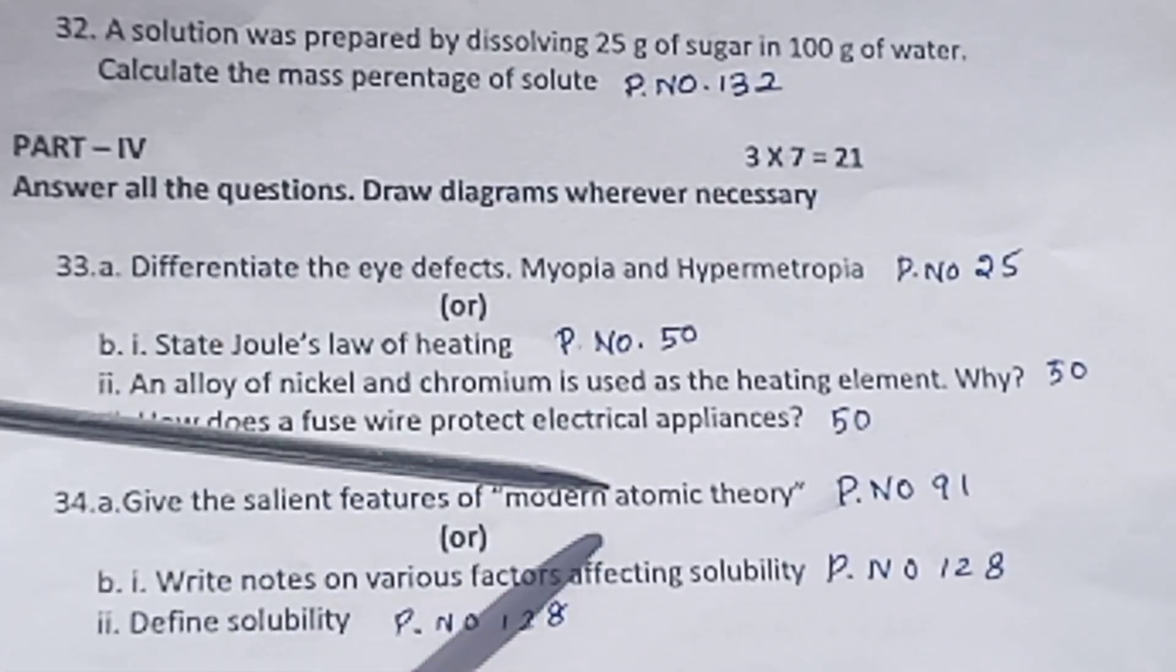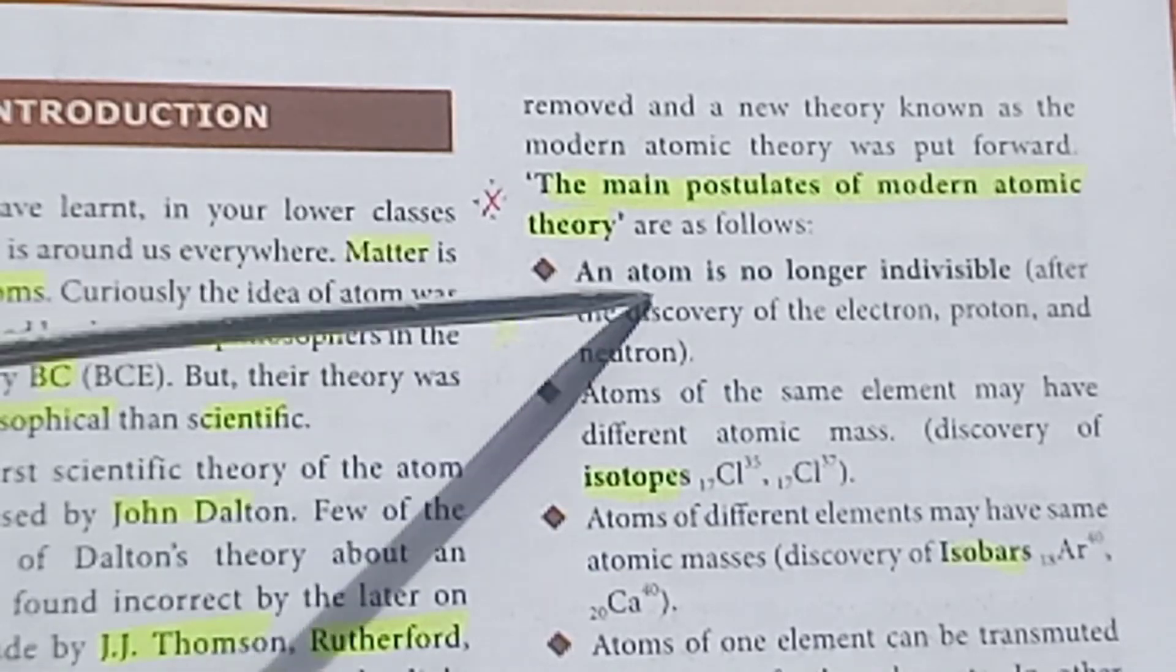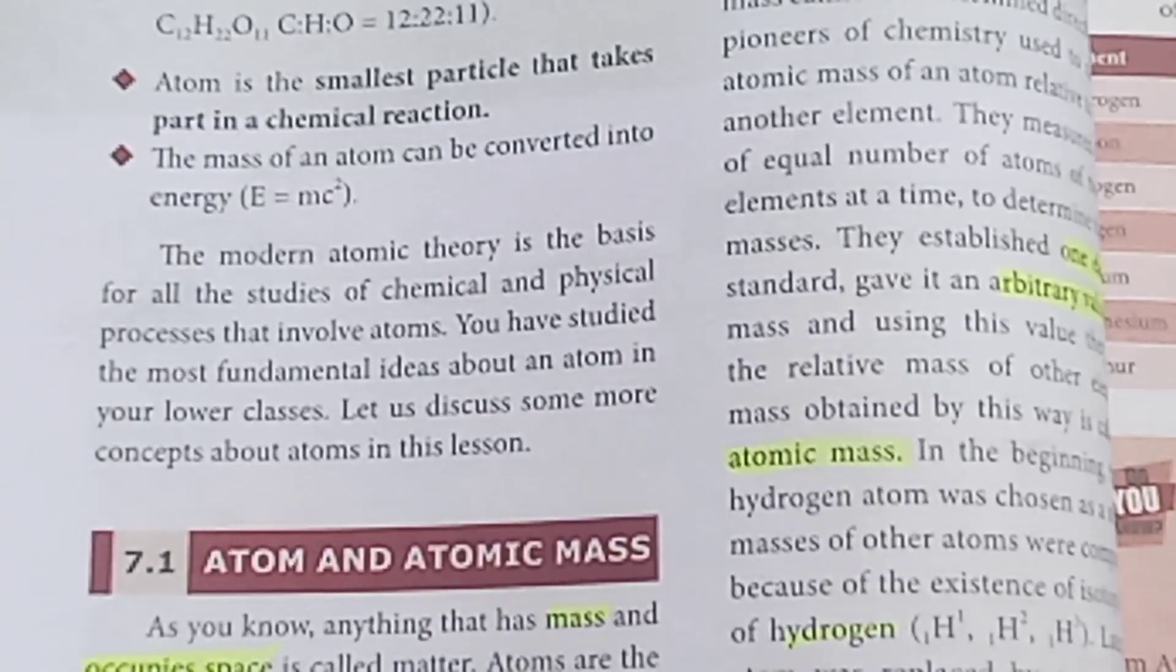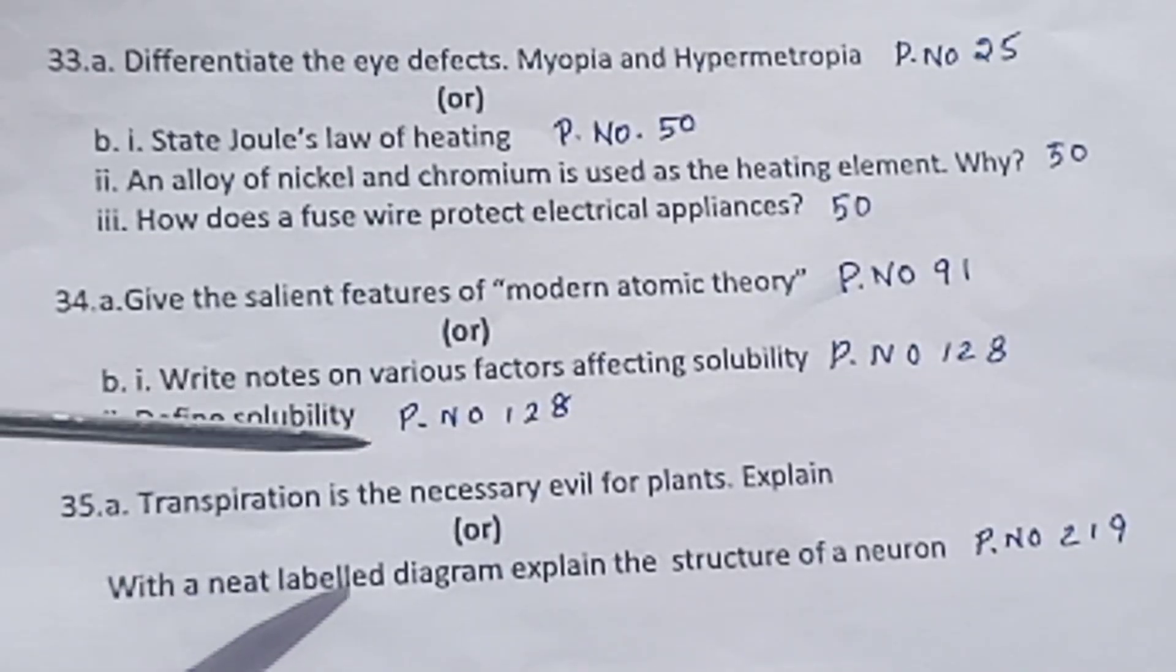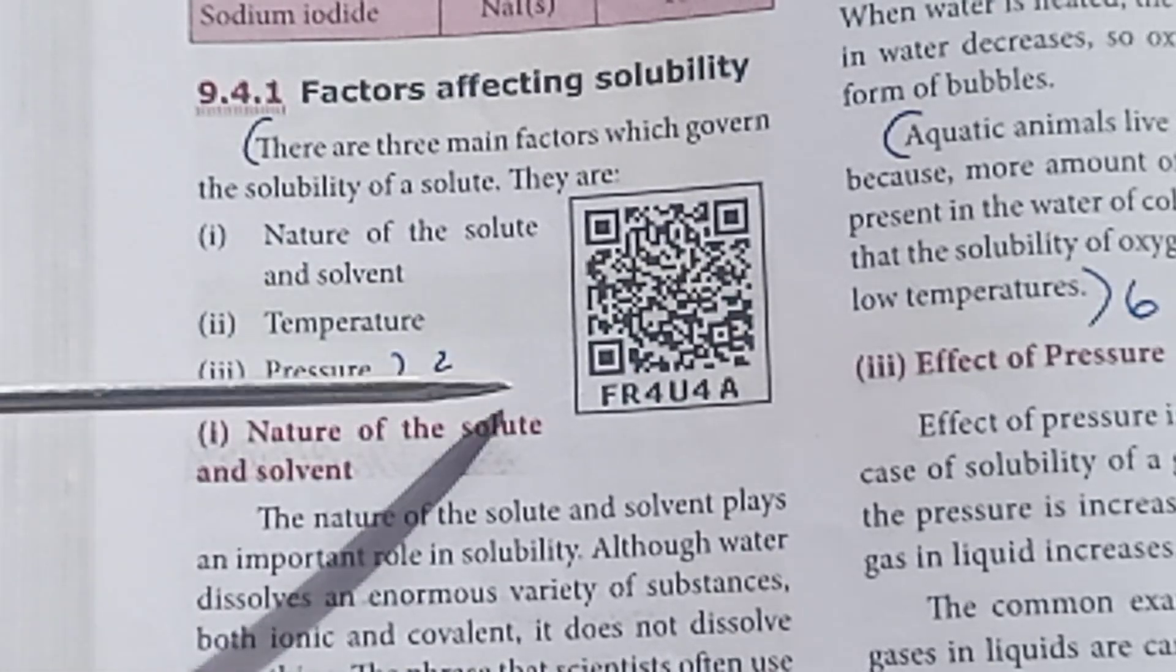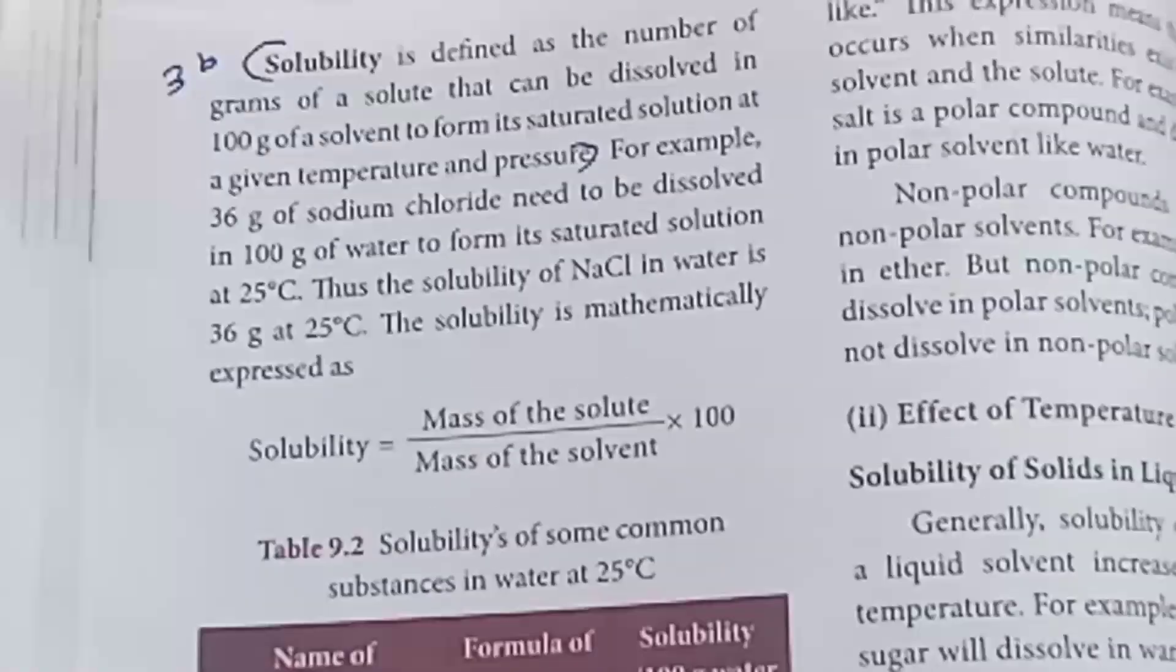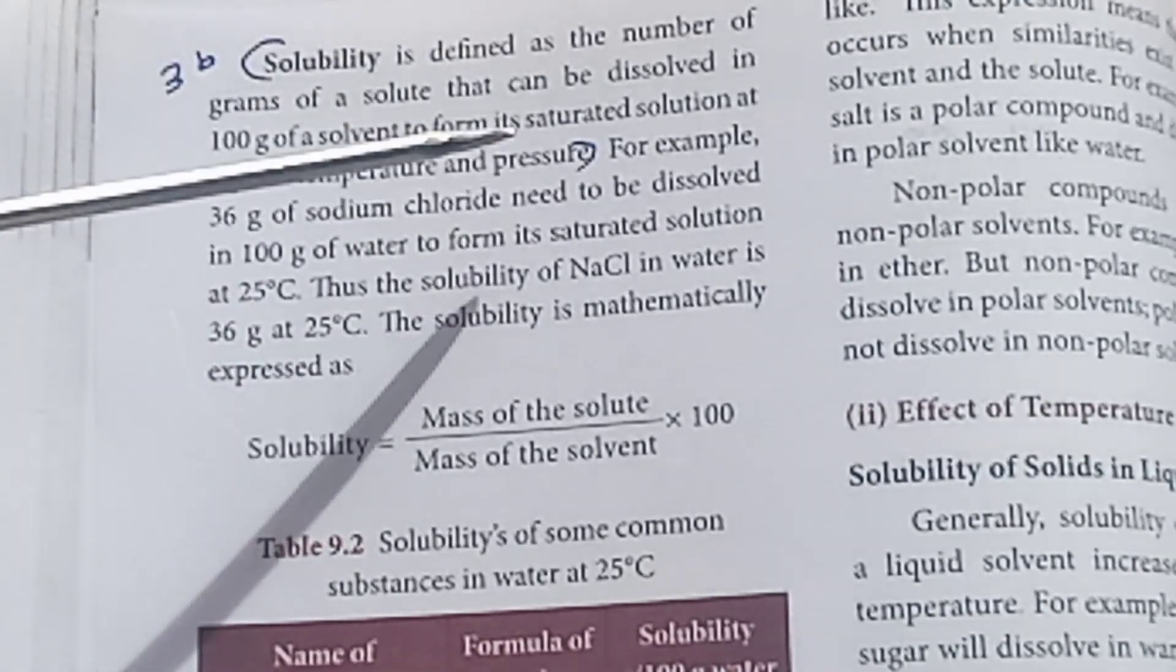Question 34a: Give the salient features of modern atomic theory. Page 91. May 2022, August 2022 repeated 7 mark question. Very important. Page 91. An atom is no longer indivisible. Next page: The mass of an atom can be converted into energy, E = mc squared. Question 34b: Write notes on various factors affecting solubility. Page 128. Define solubility. Page 128. Factors affecting solubility: three points. Nature of solute and solvent. Effect of pressure: gas in liquid increases. Define solubility: at given temperature and pressure.